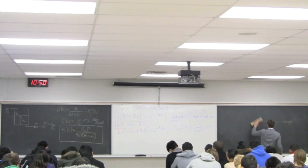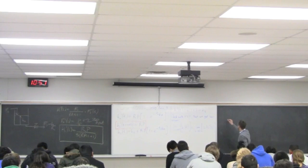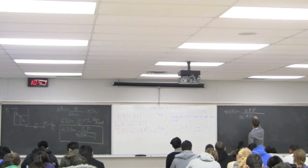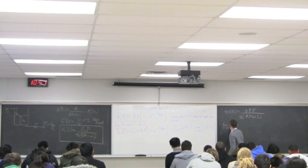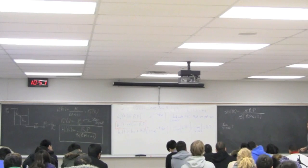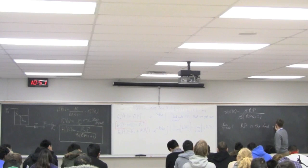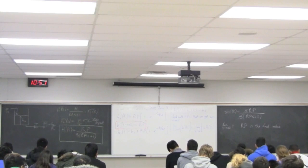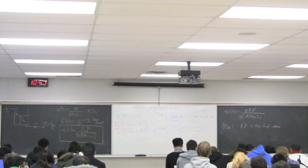Let's confirm the final value theorem gives the correct result. s multiplied by H1'(s) gives s times RP in the numerator, divided by s(RAs + 1) in the denominator. Taking the limit as s tends to zero, the two s's cancel, and as s→0 you get RP. That confirms the answer. You should regularly use the initial value and final value theorems to check your answers, even when not explicitly asked.